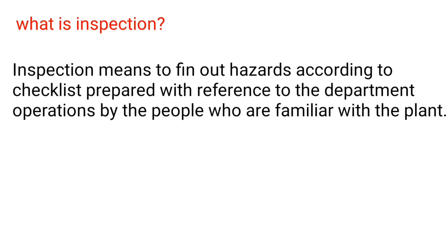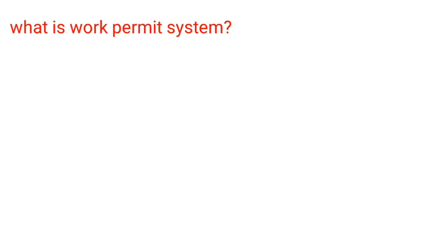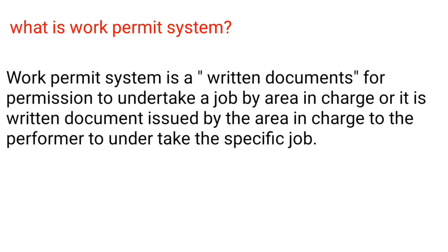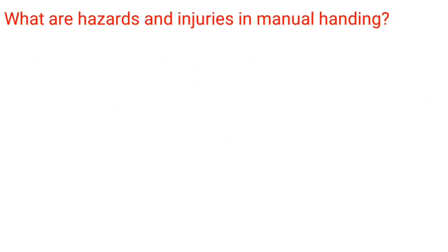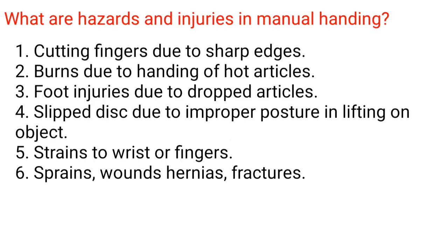What is a work permit system? A work permit system is a written document for permission to undertake a job by the area in charge, or it is a written document issued by the area in charge to the performer to undertake a specific job.